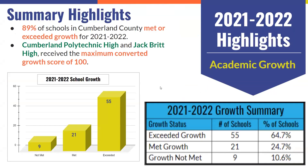Other significant highlights within the data can be found in academic growth. Eighty-nine percent of schools in Cumberland County met or exceeded growth for the 2021-22 school year. Cumberland Polytechnic High School and Jack Britt High School received the maximum converted growth score of 100. In total, 55 of our schools exceeded growth, 21 met growth, and nine did not meet growth.